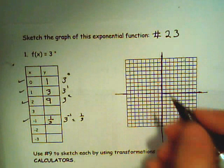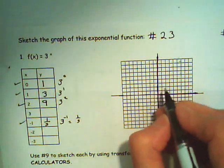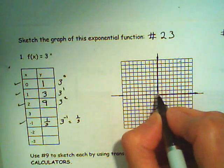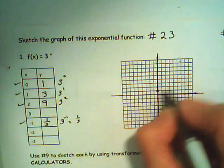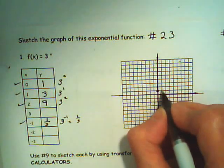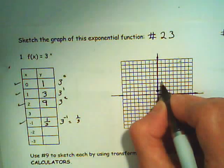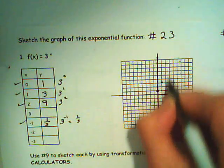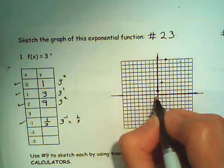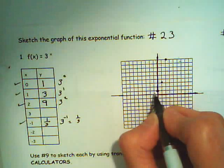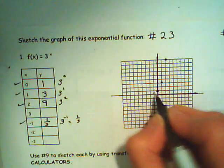To graph this first problem, the points are: (0, 1), (1, 3), (2, 9), and (−1, 1/3).